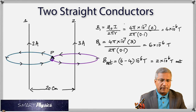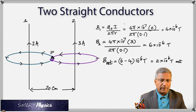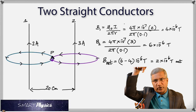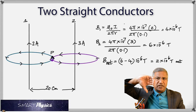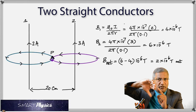If one of the currents were in the opposite direction — say the 3-ampere current flowing down instead of up — then by the right-hand rule, at point P both magnetic fields would be into the screen. Since they're now in the same direction, you add them: 6 + 4 = 10×10⁻⁶ tesla.